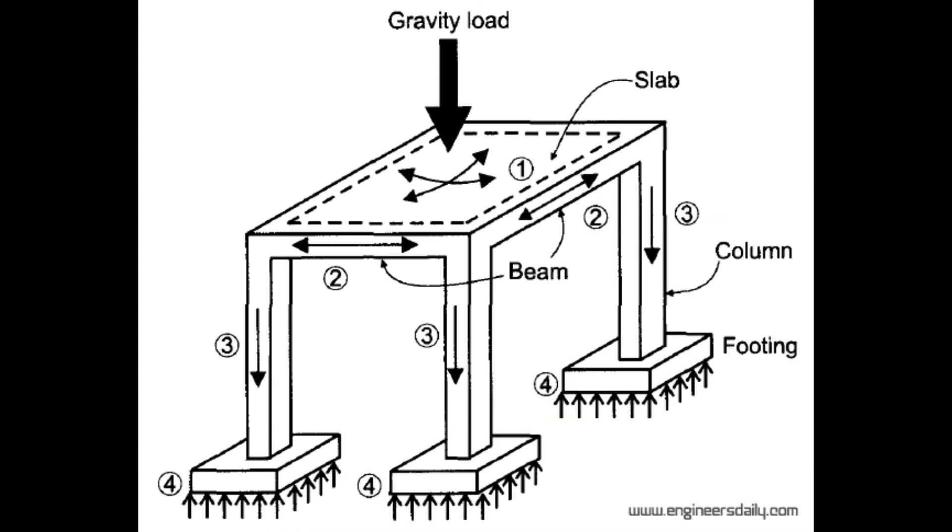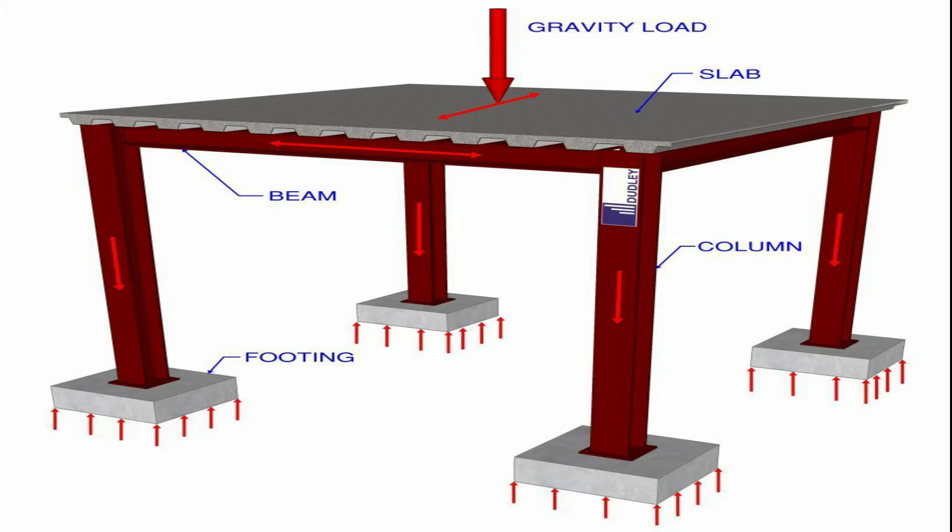This figure shows an isometric view of a concrete structure and a gravity load path. The vertical gravity load acts on a slab which transfers the load to the beams, which in turn transfer the load to the columns, and then down to the foundations.